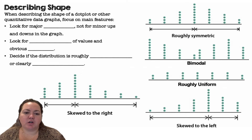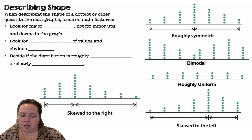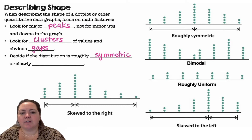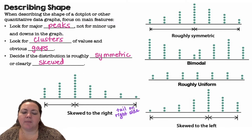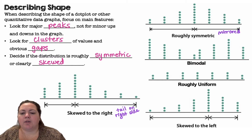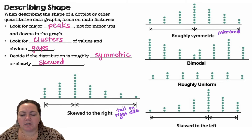Describing shape: when you're asked to describe the shape of a dot plot or any quantitative display, you want to focus on some main features. You want to look for major peaks, not just minor ups and downs. You want to look for clusters of values and any obvious gaps. And you want to decide if the distribution is roughly symmetric or clearly skewed. Skewed to the right means the tail is on the right side — that's where the data is trailing off with fewer values. Roughly symmetric is going to be kind of a mirror image on both sides; it doesn't have to be perfect, but it's roughly symmetric.